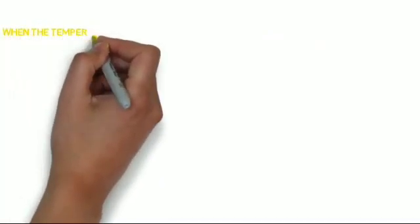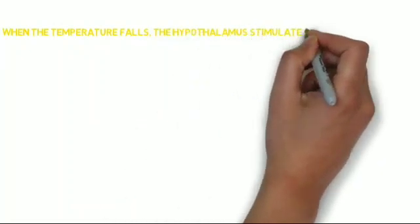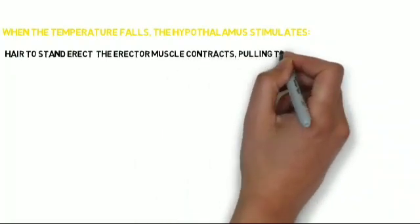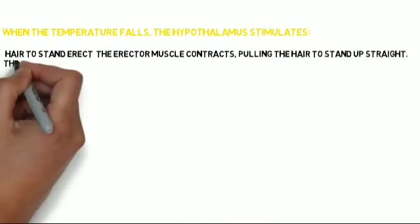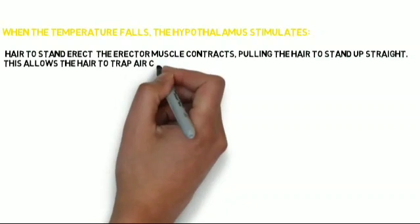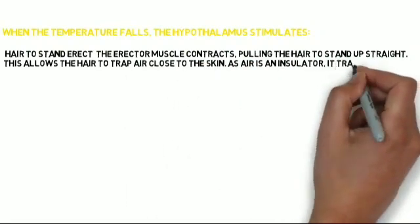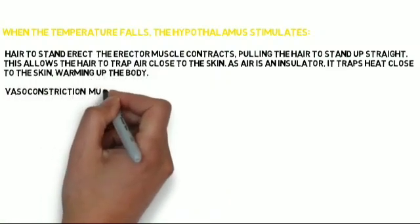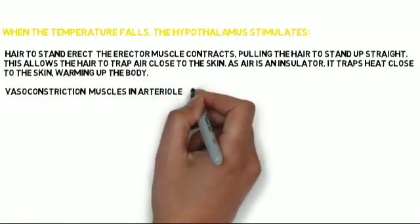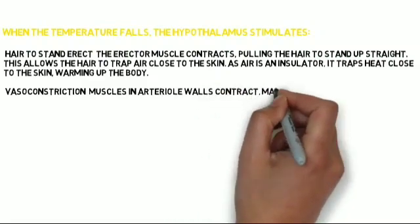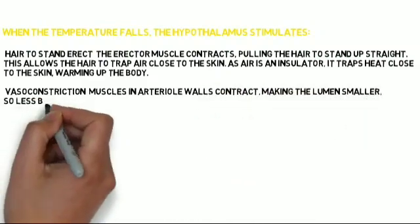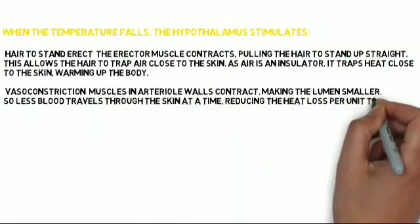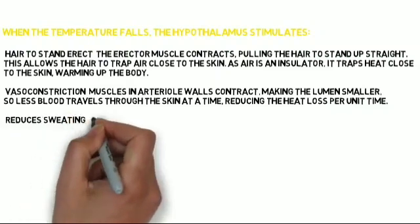When the temperature falls, the Hypothalamus stimulates the following. Hair to stand erect: the erector muscles contract, pulling the hair to stand up straight. This allows the hair to trap air close to the skin. As air is an insulator, it traps heat close to the skin, warming up the body. Vasoconstriction: muscles in arteriole walls contract, making the lumen smaller, so less blood travels through the skin at a time, reducing the heat loss per unit time.